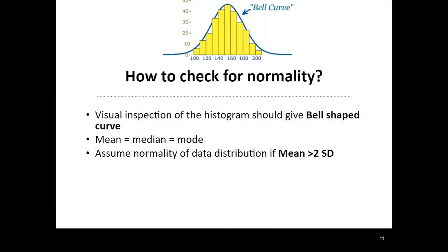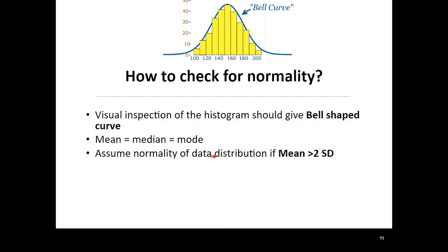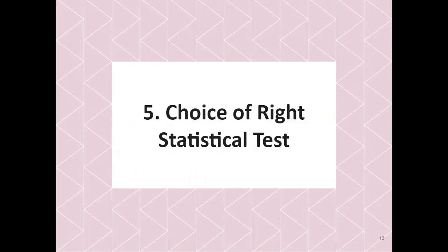The easiest way to check for normality is the visual inspection of the histogram. If there is a bell-shaped curve then the data is normally distributed. The mean, median, and mode should coincide, and you can assume normality of data distribution if the mean is within two standard deviations.